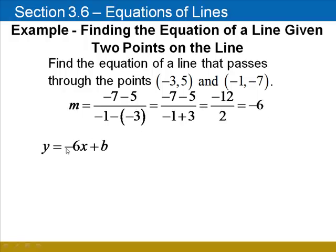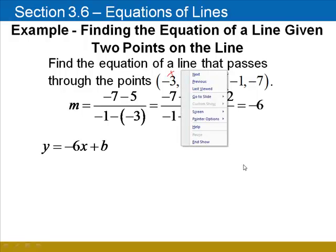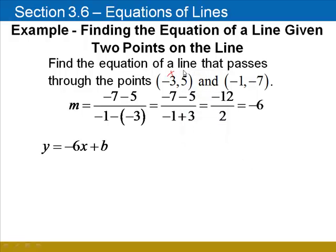Substitute that in for m in the y equals mx plus b form. Now we can use either point to substitute a value for x and y, and I'm going to use our first point. Substituting 5 in for y and negative 3 in for x, negative 6 times negative 3 is 18. Subtract 18 from both sides. We find that b is negative 13.